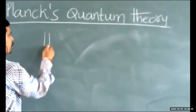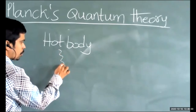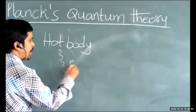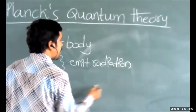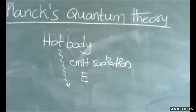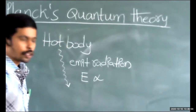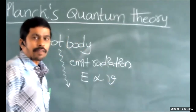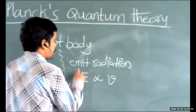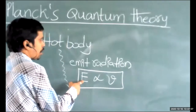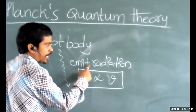Suppose here I'm taking a hot body — if it is considered as a hot body and the hot body is going to emit some radiation, the emitted radiation has some energy. The energy of emitted radiations is always directly proportional to the frequency of emitted radiations. This was proposed by Max Planck in his quantum theory.